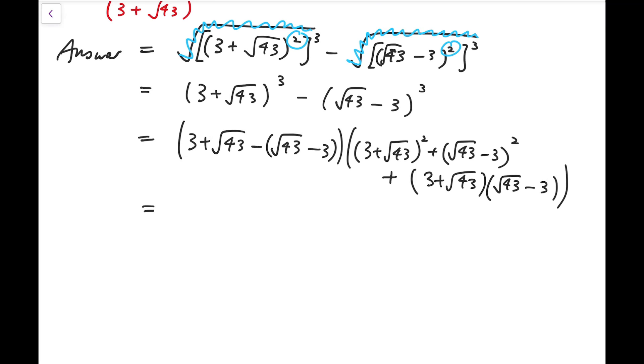And so for the first part of the product, it's 6 multiplied by 9 plus 43 plus 6 root 43, and the second term is similar, but we are subtracting 9 and 43 by 6 root 43, and at the end, we add 43 minus 9, because it's the difference of two squares.